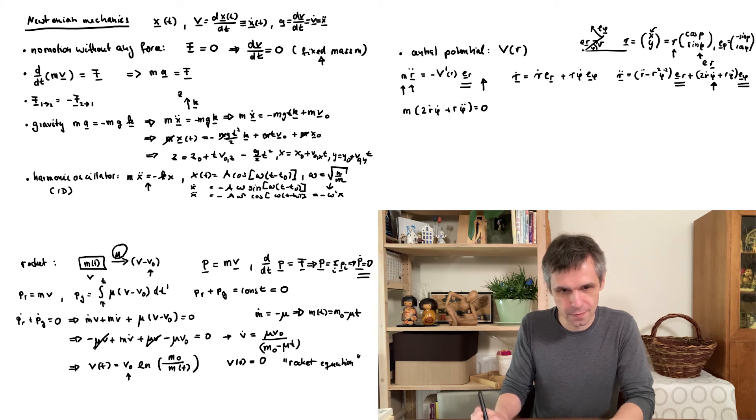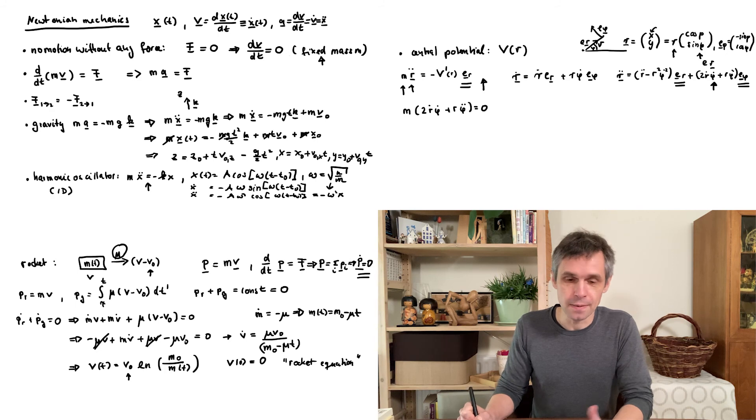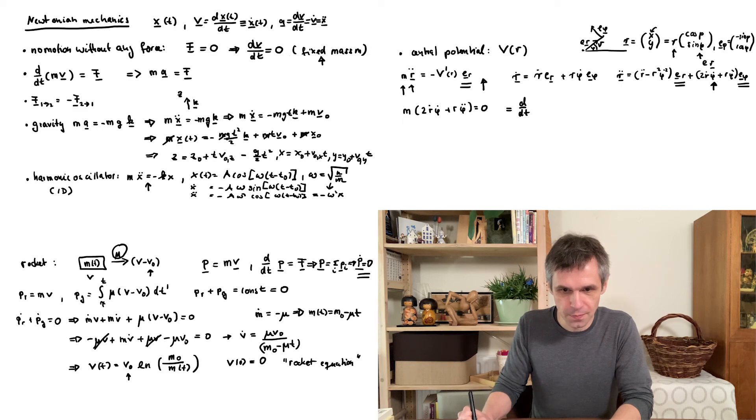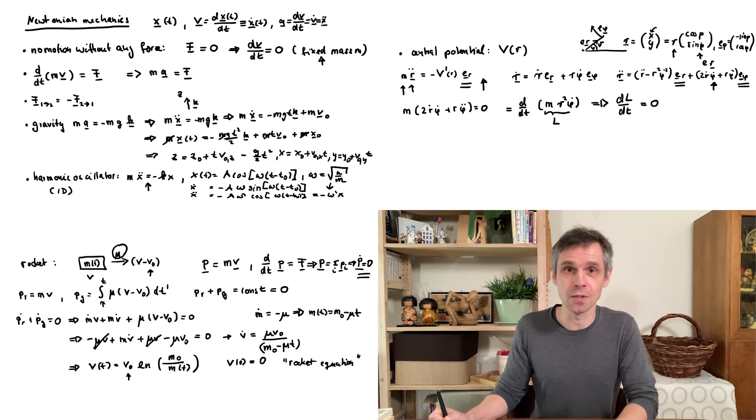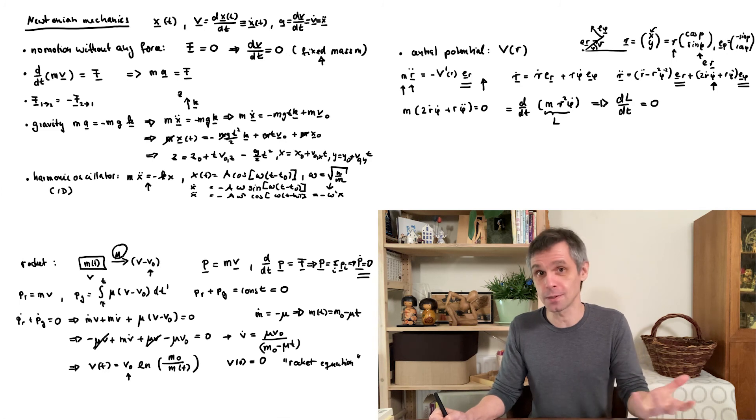The angular momentum. And this we can integrate immediately when we recognize that what is given here is just a derivative of the following expression, which we call the angular momentum. And so this angular momentum does not change over time. So this is the so-called law of conservation of angular momentum in the central potential. Here just in two dimensions, but this can also be generalized to three dimensions.